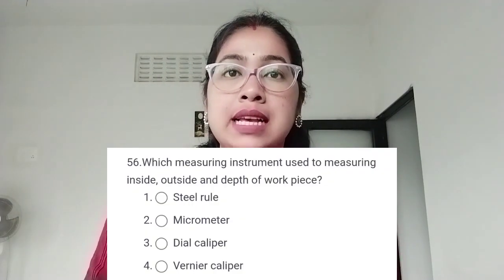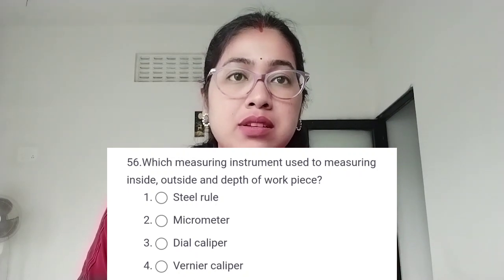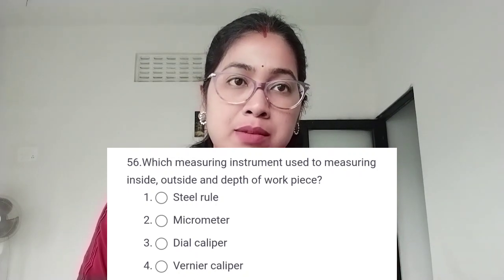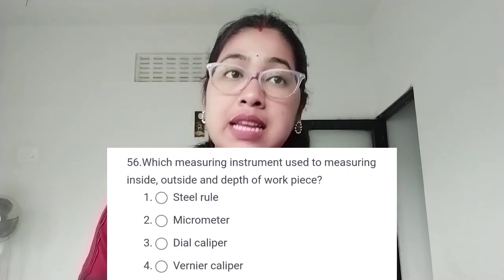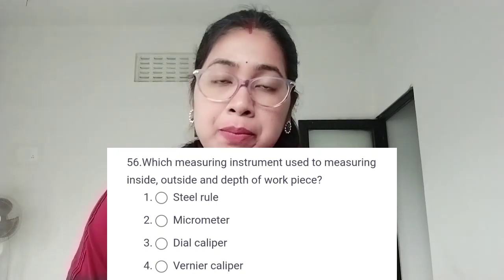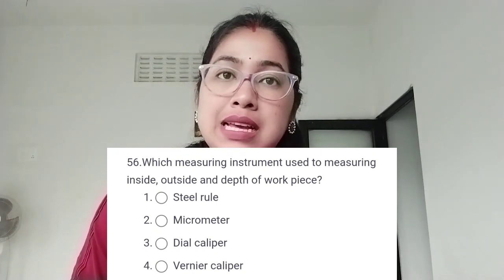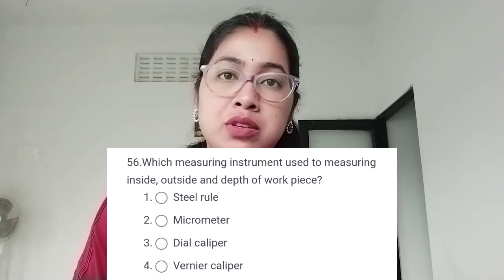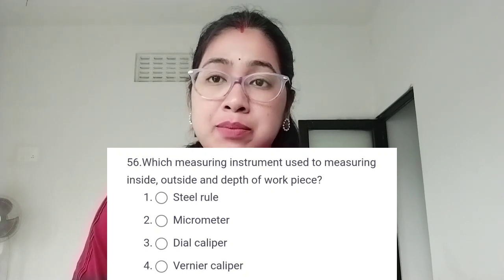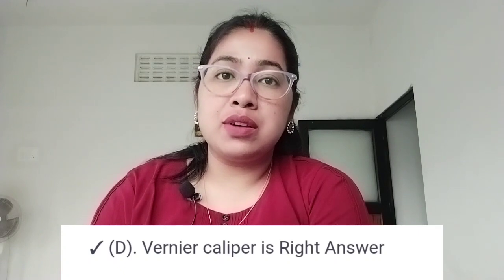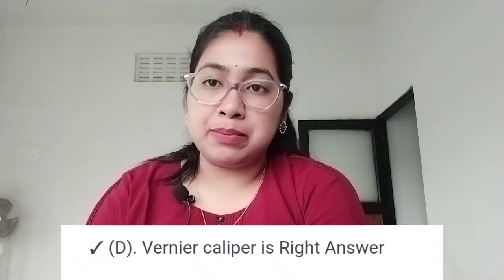Next question: which measuring instrument is used to measure the inside, outside, and depth of a workpiece? Option 1: steel rule. Option 2: micrometer. Option 3: dial caliper. Option 4: vernier caliper. The correct answer is vernier caliper.